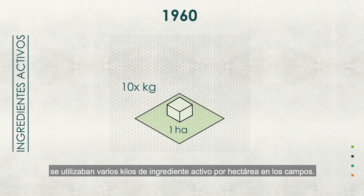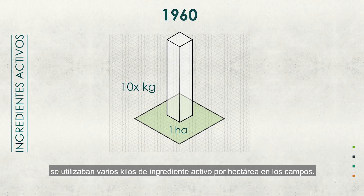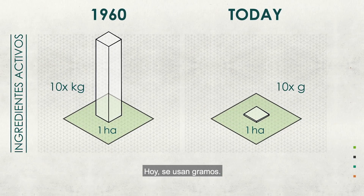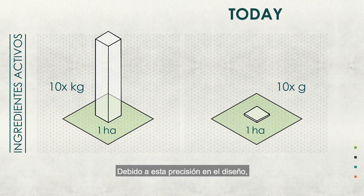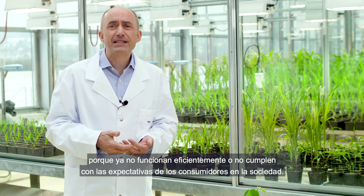This has had a huge benefit. Back in the 1960s, there were tens of kilos of active ingredient being applied to a hectare of a field; today it's tens of grams — it's miniscule — because of this precision. Over the last 30 years, we've lost 30 percent of active ingredients globally because they no longer work effectively or no longer meet societal expectations.